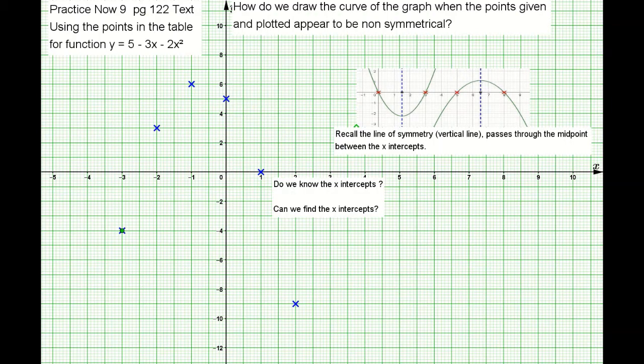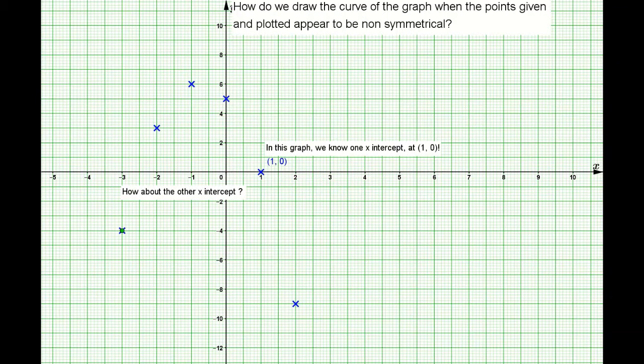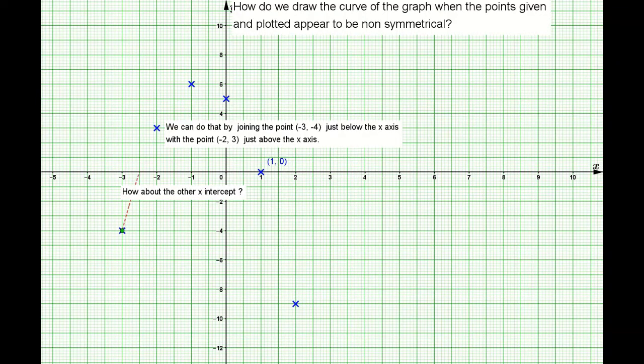Do we know the x-intercept? Can we find it? Yes. In this graph we already got one which is at 1, 0. Where is the other one? Let's take a look at the first two points: point negative 3, 4 is just below the x-axis.